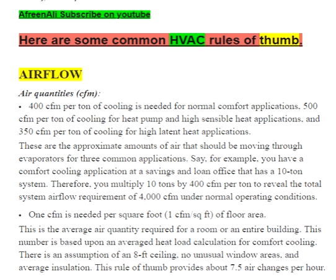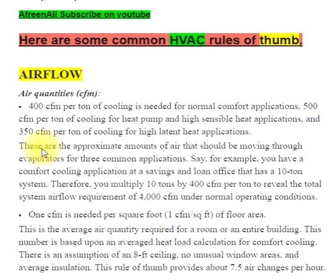Airflow Air Quantities CFM: 400 CFM per ton of cooling is needed for normal comfort applications, 500 CFM per ton of cooling for heat pump and high sensible heat applications, and 350 CFM per ton of cooling for high latent heat applications. These are the approximate amounts of air that should be moving through evaporators for three common applications.